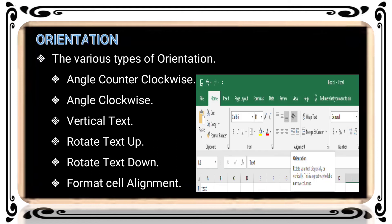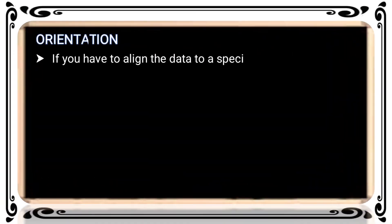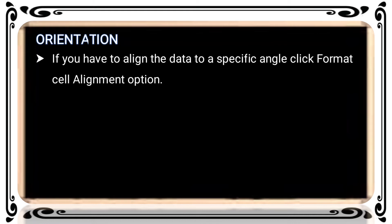In the Alignment group, go to the Home tab and select the Alignment group options. One of those options is Orientation. From the Orientation drop-down list, you can click to see different types of angle orientation options. If you select any one option, you can choose and apply it to selected cell or cell ranges.